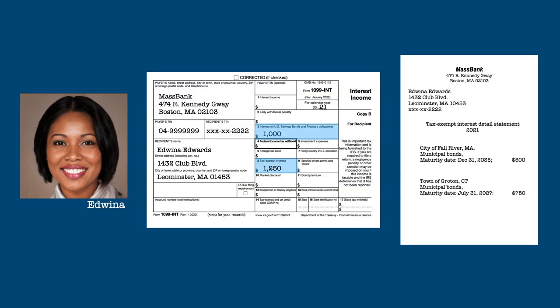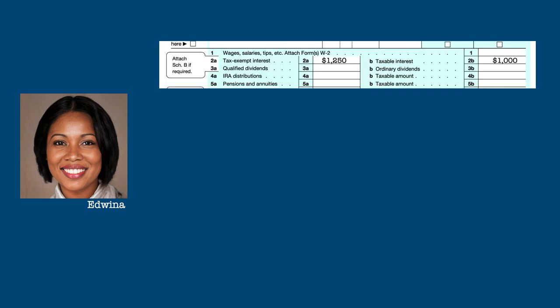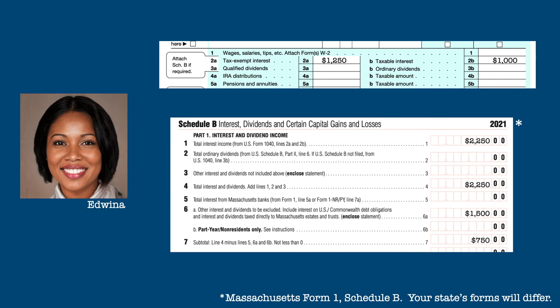For example, Edwina is a resident of Massachusetts. She receives $1,000 in interest from Treasury securities, $500 in interest from bonds issued by the city of Fall River, Massachusetts, and $750 in interest from bonds issued by the town of Groton, Connecticut. On her Form 1040, Edwina would have $1,250 of tax-exempt interest on line 2A and $1,000 in taxable interest reported on line 2B. On her Massachusetts Form 1, she would only have $750 in taxable interest income from her bonds issued by Groton, Connecticut. All her other interest income would be exempt from state tax.